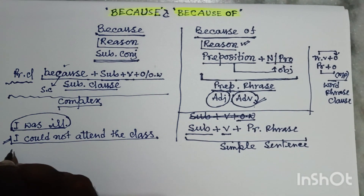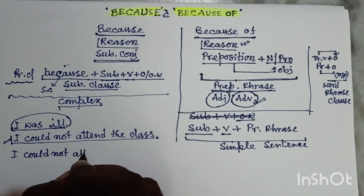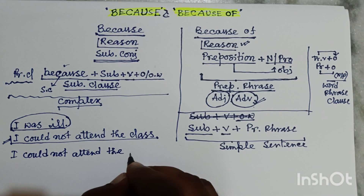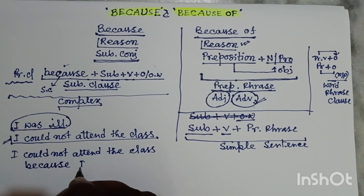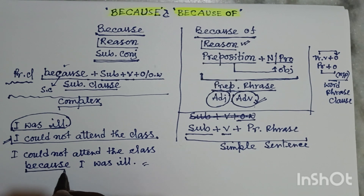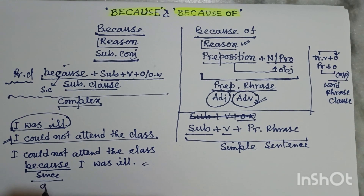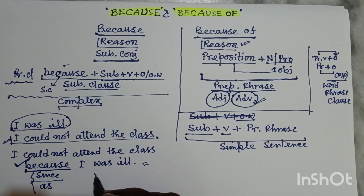It's very simple. You can see: 'I could not attend the class because I was ill.' My dear friends, it's a correct sentence. In this place we can also use 'since' or 'as' — both these conjunctions are also used in this situation — but to show a strong reason we should always use 'because'; it is preferable. Whenever 'because' is used, it shows a strong reason.